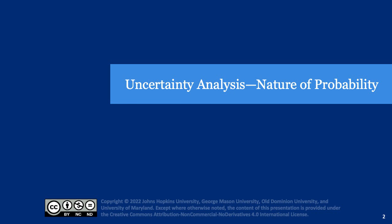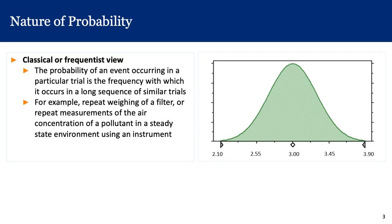Before we get into the analysis of uncertainty, we're going to take a few minutes to discuss probability and what we really mean by probability. The classical or frequentist view of probability is the one that we are most familiar with, and we have encountered it in various statistics courses. This is that the probability of an event occurring in a particular trial is the frequency with which it occurs in a long series of similar trials.